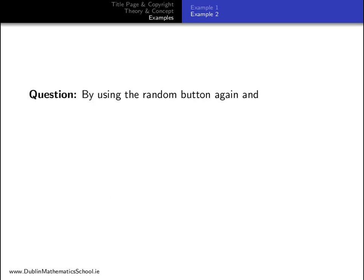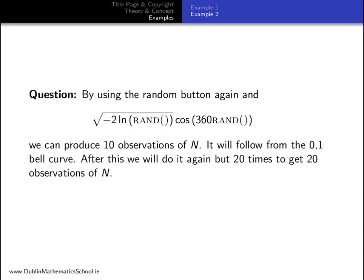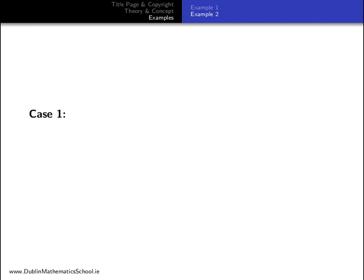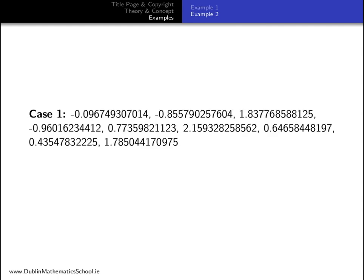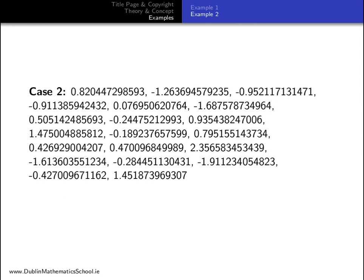By using the random button again and the Box-Muller transform we can produce 10 observations of n. It will follow from the 0-1 bell curve pattern. After this we will do it again but 20 times to get 20 observations of n. Here is case 1, 10 simulated observations of n. Here is case 2, 20 simulated observations of n.